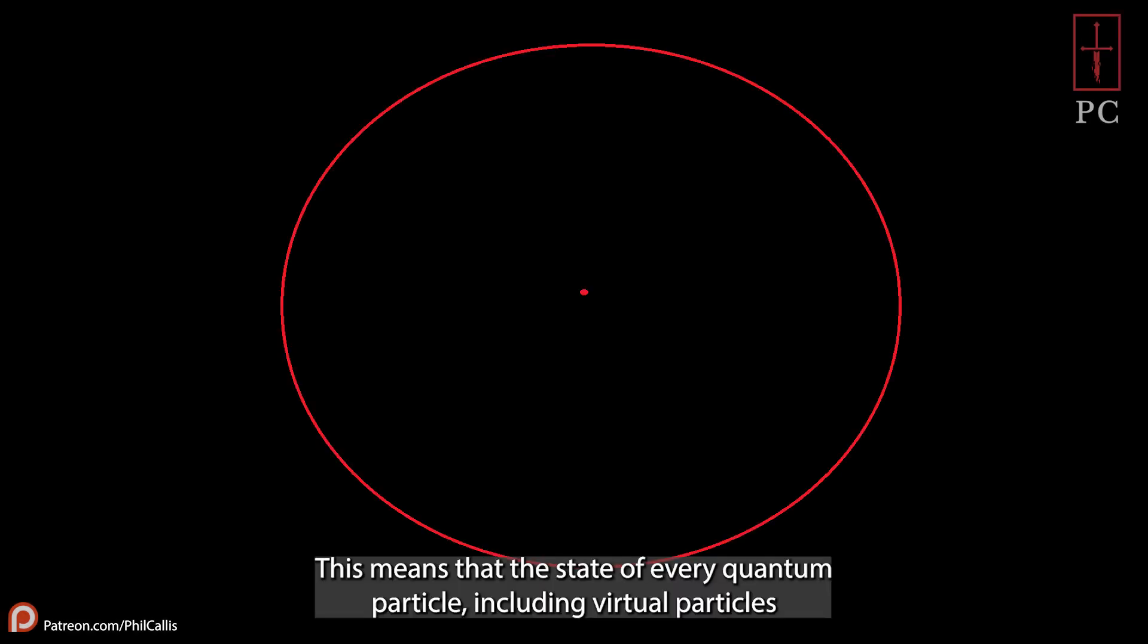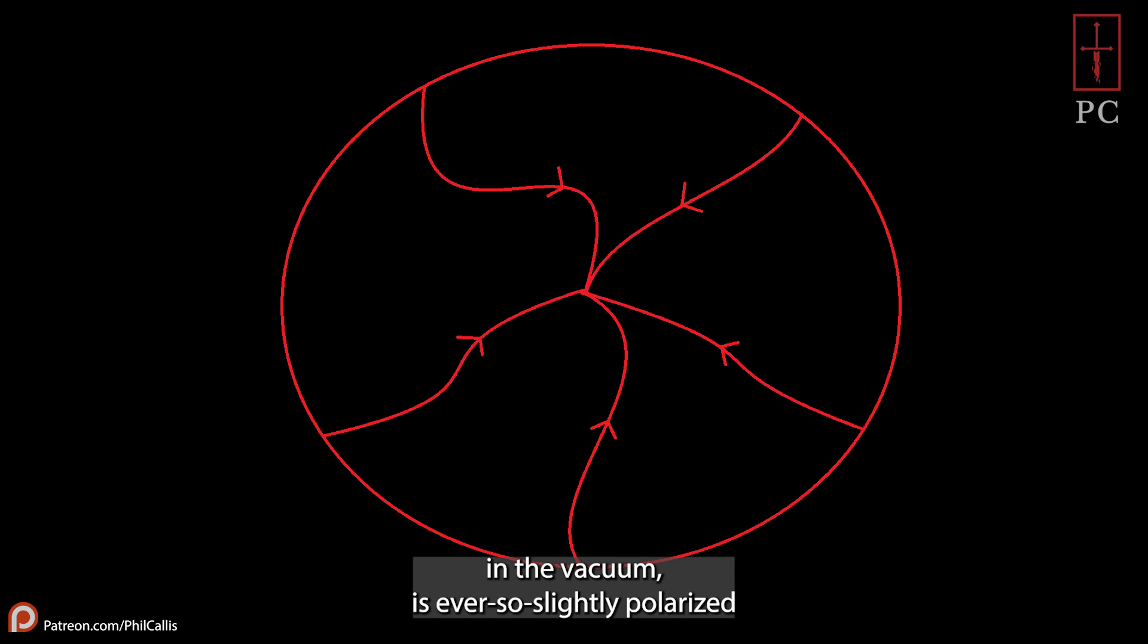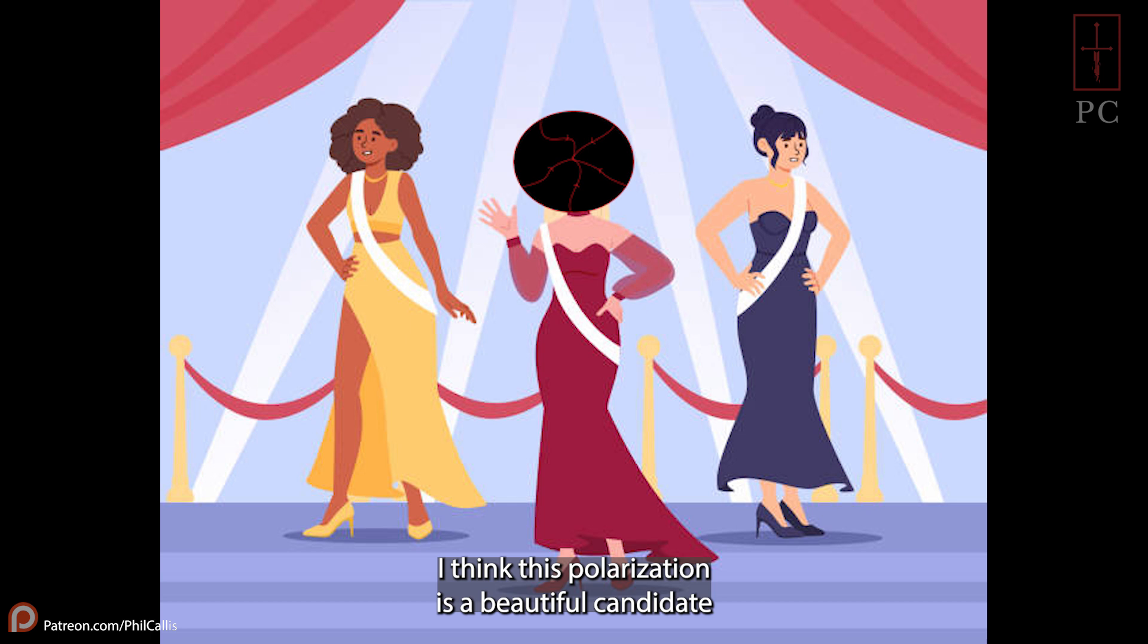This means that the state of every quantum particle, including virtual particles in the vacuum, is ever so slightly polarized by every accelerating particle in the observable universe. I think this polarization is a beautiful candidate for a deterministic origin of quantum wavefunction collapse outcomes.